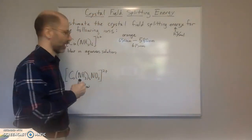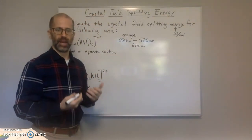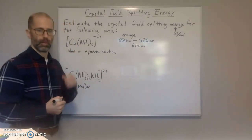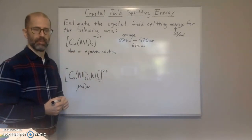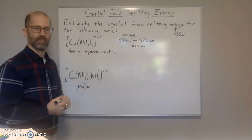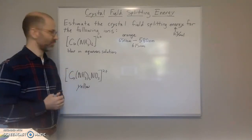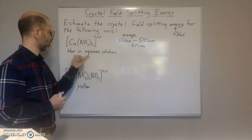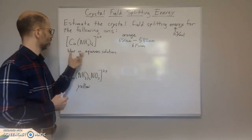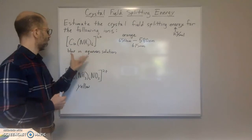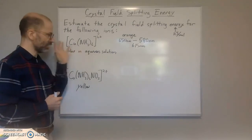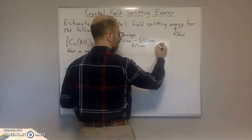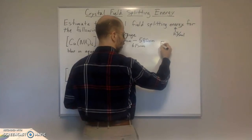If we do that, we get 615. So what we could do is use 615 nanometers as the average estimated wavelength of the light being absorbed by the complex ion.